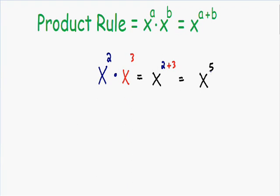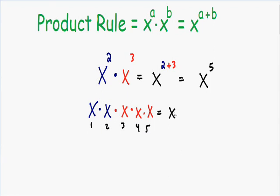This rule actually really makes sense. Let me show you an illustration. X squared is just x multiplied by itself two times, and this is being multiplied with x cubed, which is just x multiplied by itself three times. If we count our total number of x's we have one, two, three, four, five x's — x multiplied by itself five times, so we have a five in the exponent.